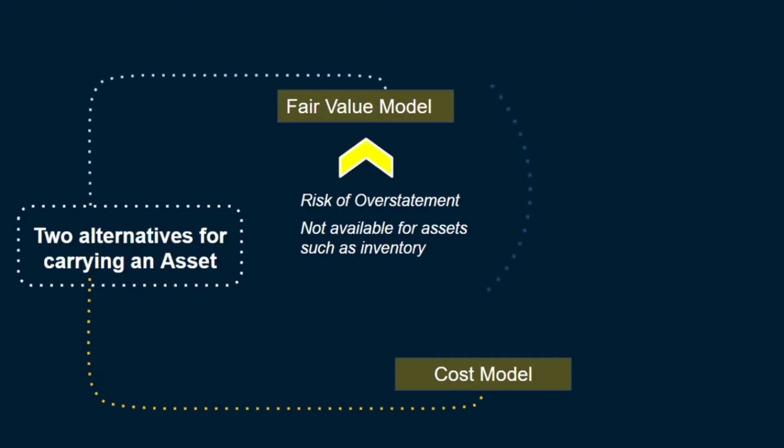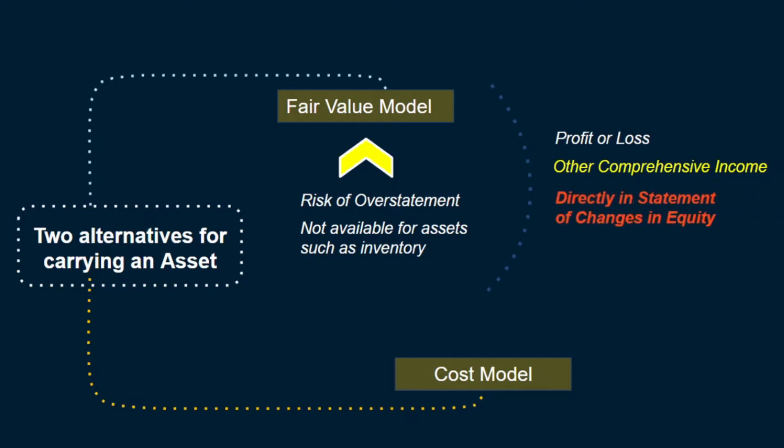Even in those cases where fair value recognition is allowed, the standard setters are very particular as to where that fair value change should be recognized. For example, if an asset was purchased for $100 and it increases to $120, should that $20 increase be reflected in profit or loss or other comprehensive income? Or should it be recognized in the statement of changes in equity directly, without going through profit or loss and OCI? In a way, when we recognize a change in profit or loss, we are signaling to investors that this change has something to do with the performance of the entity.